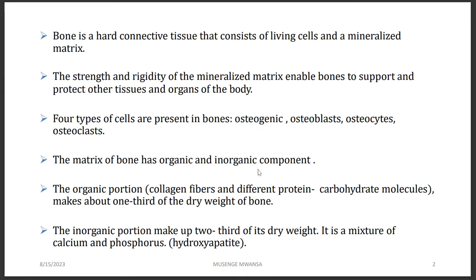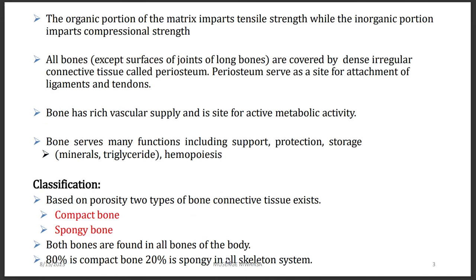The matrix of bone has organic and inorganic components. Organic means made up of carbon. The organic components include collagen fibers and different proteins like carbohydrate molecules, making up one-third of the dry weight of the bone. The majority of the matrix is inorganic, making up two-thirds of the dry weight, and it is a mixture of calcium and phosphorus, also known as hydroxyapatite. The organic portion imparts tensile strength, while the inorganic portion imparts compressional strength.